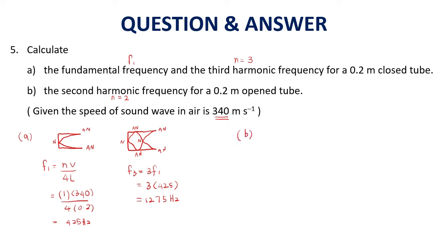Question B. The second harmonic frequency. Second harmonic for open tube. Second harmonic is also first floor. The diagram must be nice. Label A, N - labeling is mandatory. The equation is slightly different from closed tube: nv over 2L. So f, it will be f_2 because it's first floor. N will be 2 times 340 divided by 2L, which is 0.2. And then you get 1700 hertz.